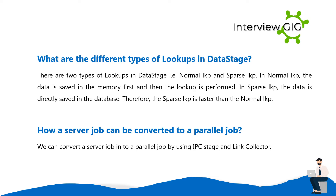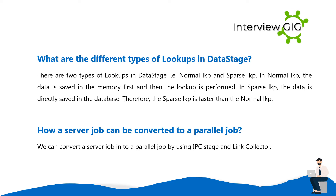In Normal LKP, the data is saved in memory first and then the lookup is performed. In Sparse LKP, the data is directly saved in the database; therefore Sparse LKP is faster than Normal LKP. How can a server job be converted to a parallel job? We can convert a server job into a parallel job by using IPC stage and Link Collector.